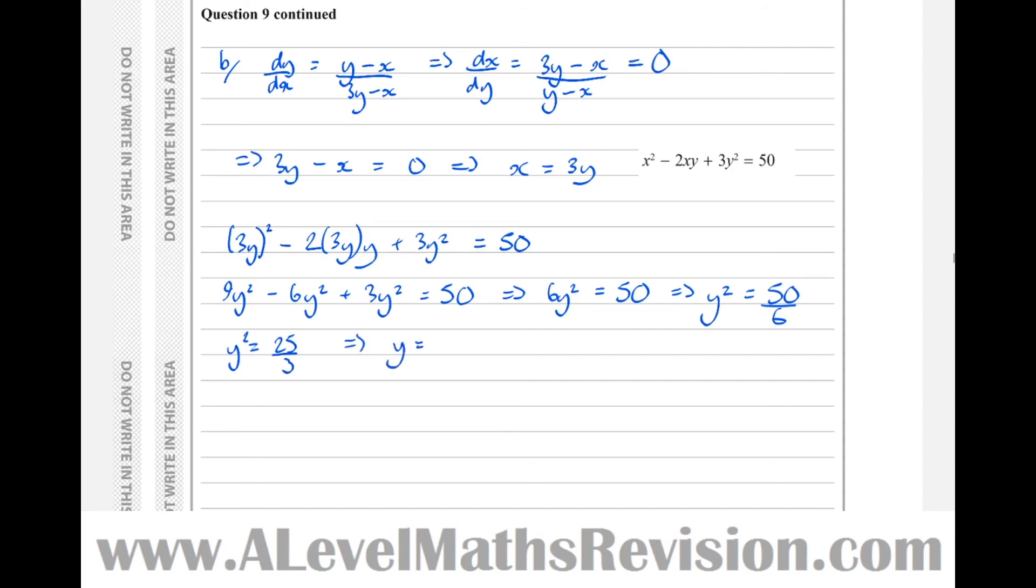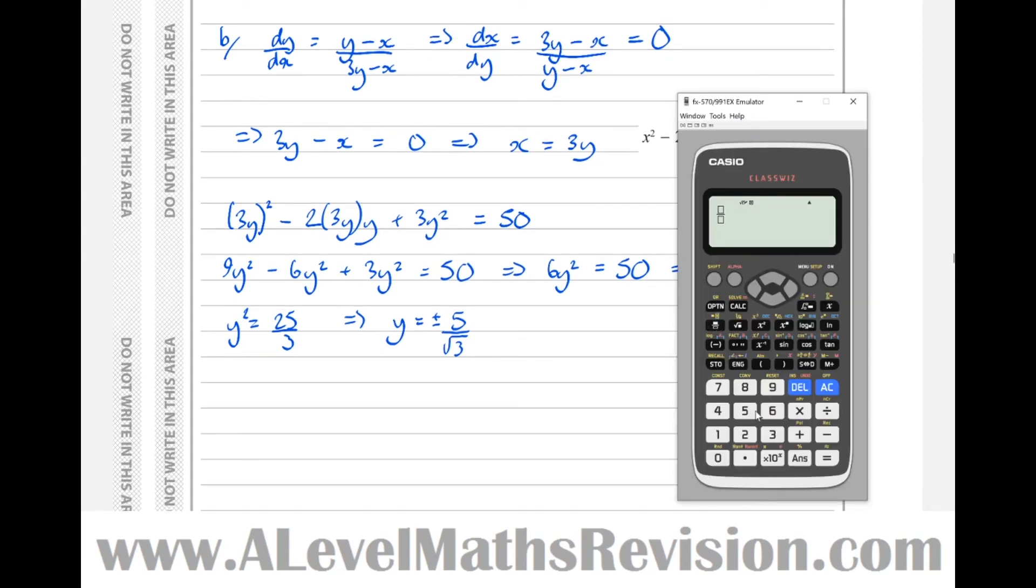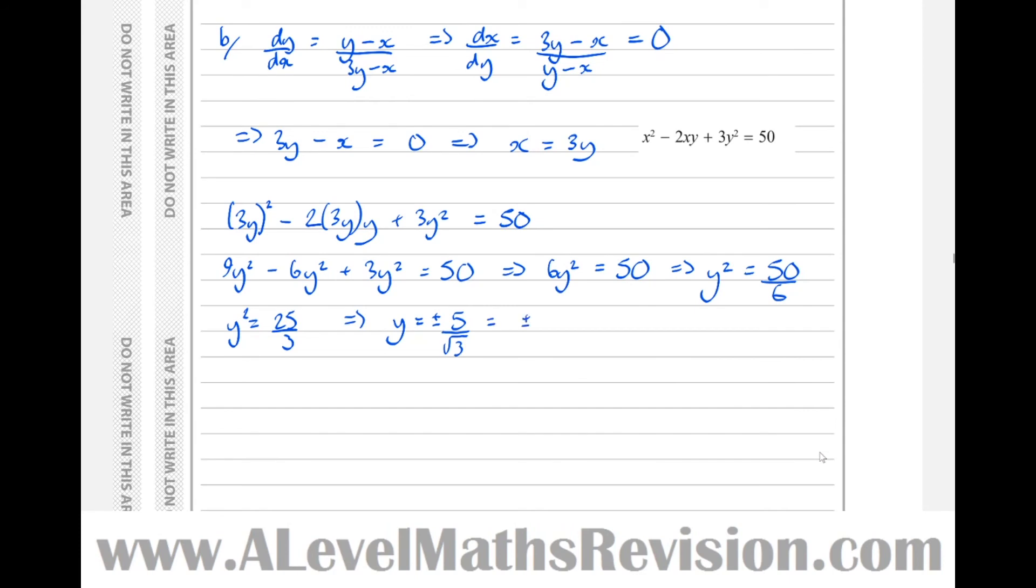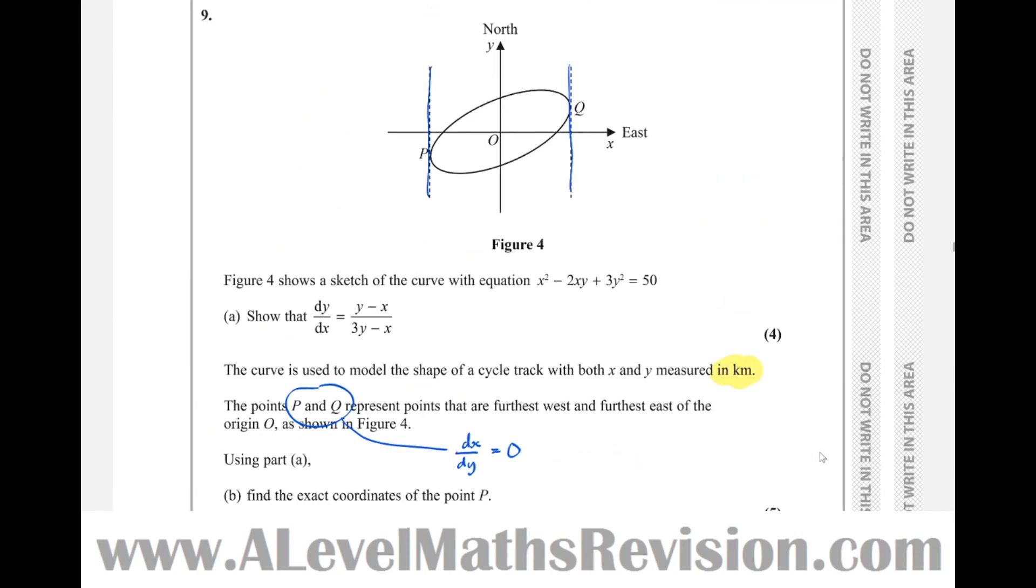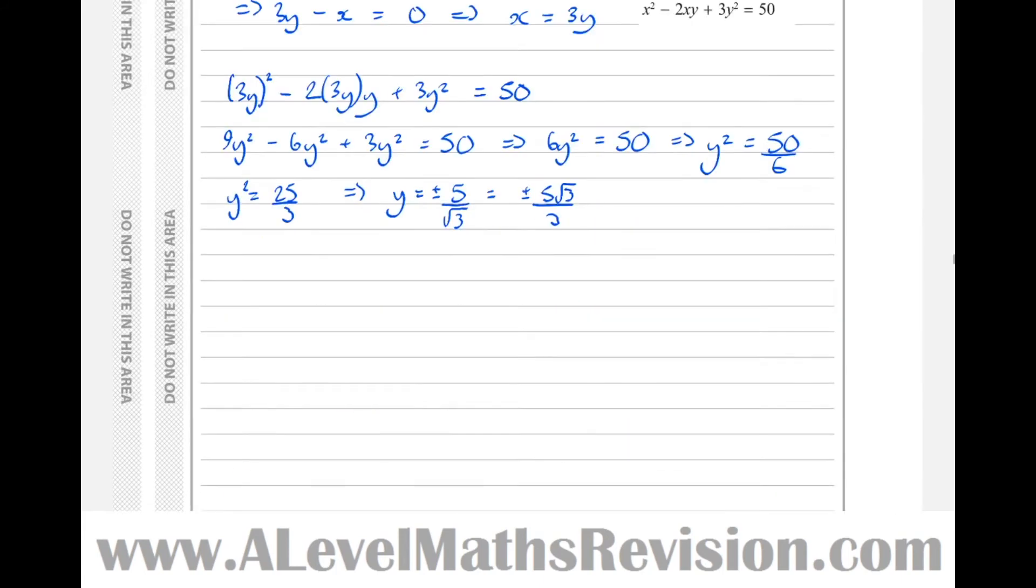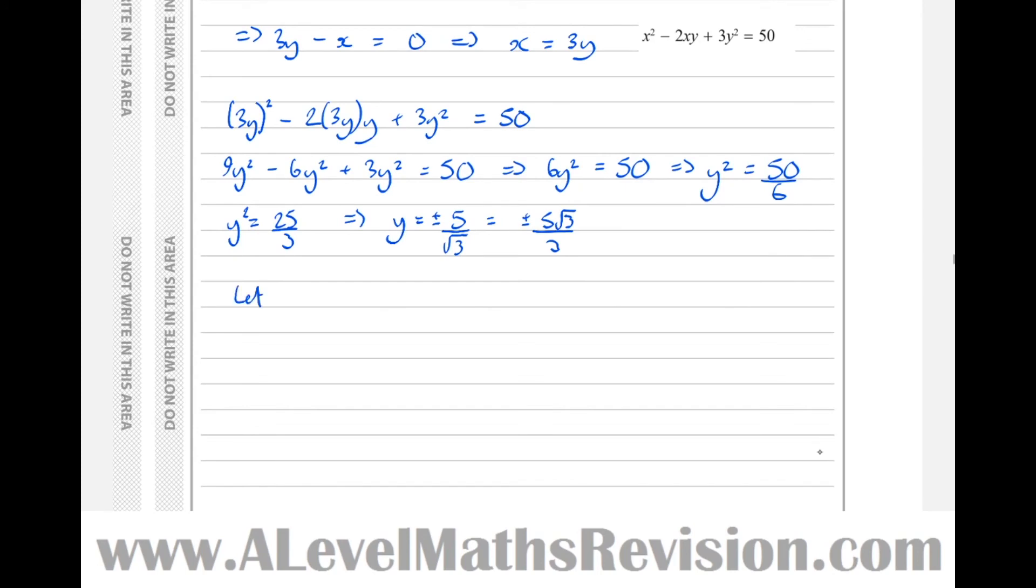Which means y equals, well, 25 over 3 square rooted is 5 over root 3. But when we unsquare a number, we must do plus or minus. So plus or minus 5 over root 3, which in simplified surd form is plus or minus 5 root 3 over 3. But we want only the negative one for point P, which has a negative y coordinate. Let y equal minus 5 root 3 over 3, which means x equals 3 times that, so x equals minus 5 root 3.